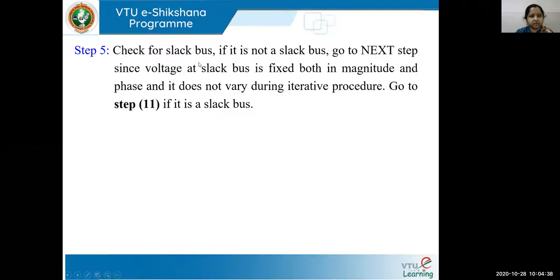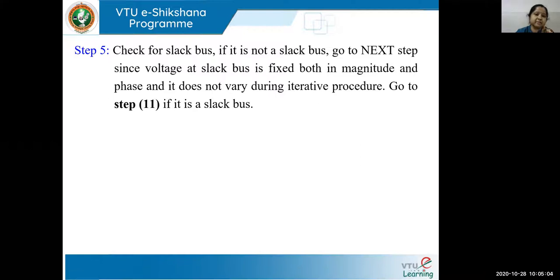Inside the iteration loop, after setting the bus count, if your first bus is a slack bus, go to the next step. Since the slack bus voltage is fixed both in magnitude and phase, and it does not vary during the iterative procedure, go to step number 11 if it is a slack bus. Step number 11 will increment the bus count: P = P + 1. If it is not a slack bus, proceed to the next step.